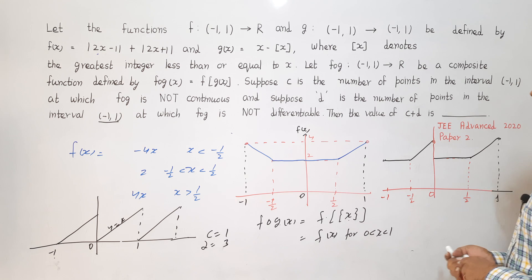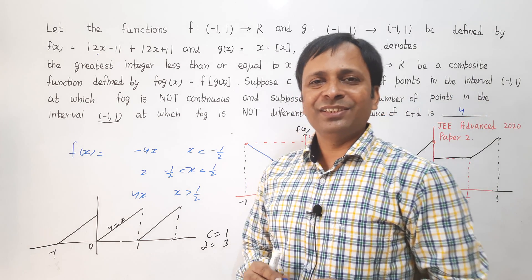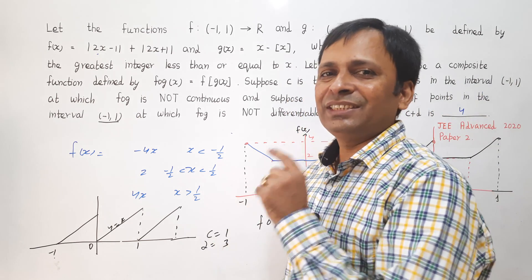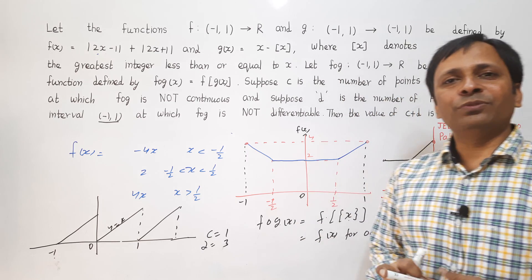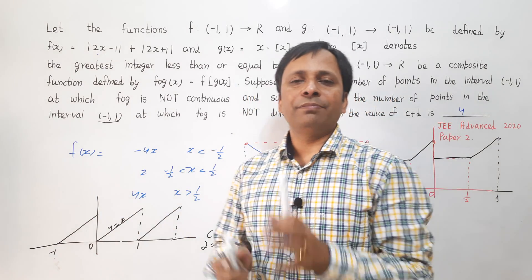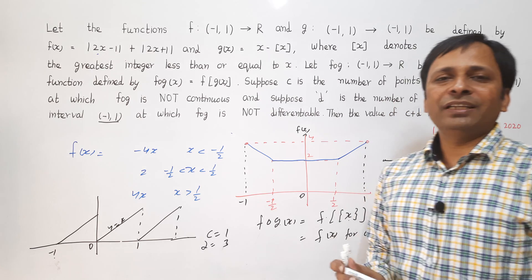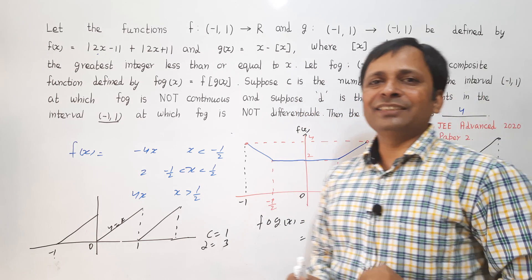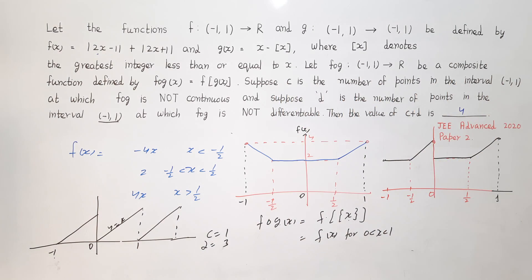So c = 1 and d = 3, giving c + d = 1 + 3 = 4. The answer is 4 — the total number of points where the function is either not continuous or not differentiable. As a further challenge: try to find c + d if the interval were instead from −100 to 100, and write your answer in the comments!